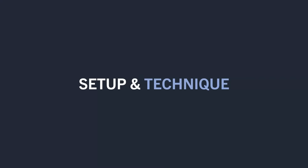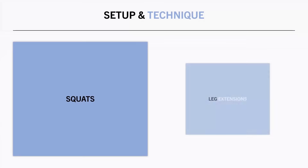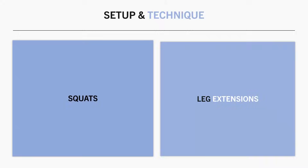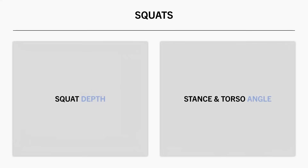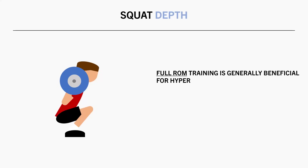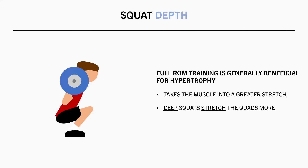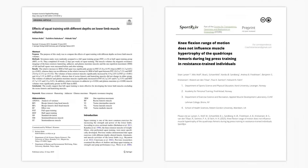Next let's move on to setup and technique recommendations to maximally stimulate the quads. For squat variants there are two primary technique considerations. The first is squat depth. Generally, training through a larger range of motion is beneficial for hypertrophy, likely because it takes muscles into a greater stretch — so squatting deeper would take the quads into a greater stretch compared with partial depth squats. We have two studies comparing different depths during squat variants on quad hypertrophy.